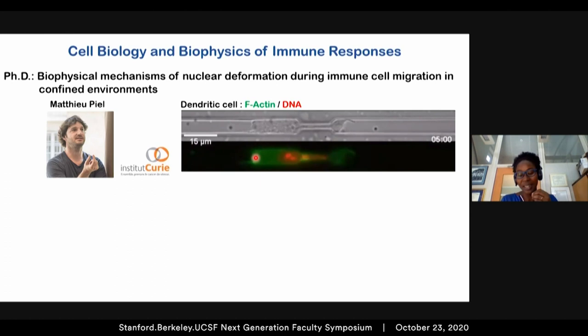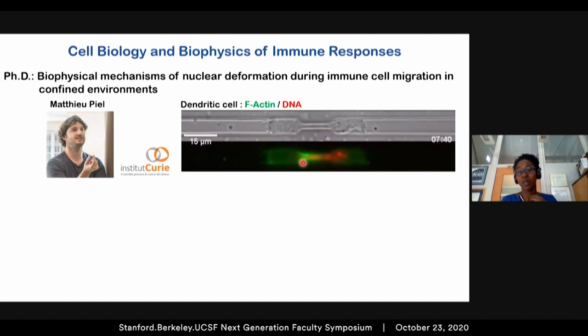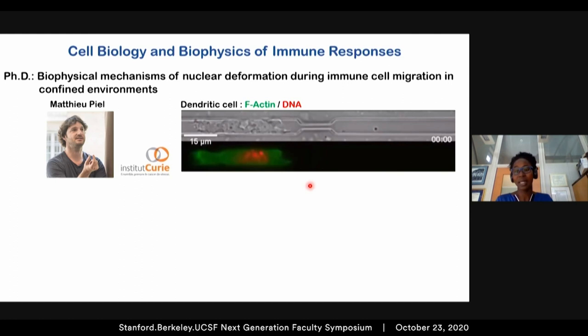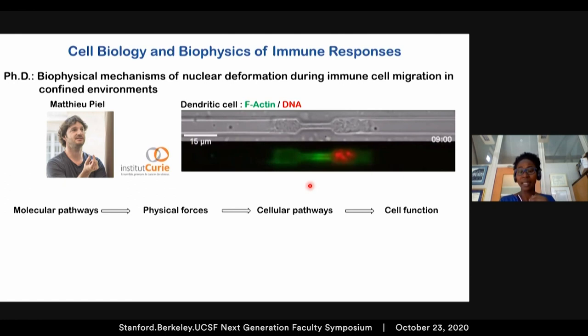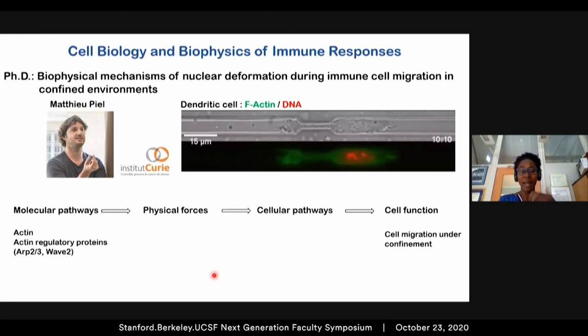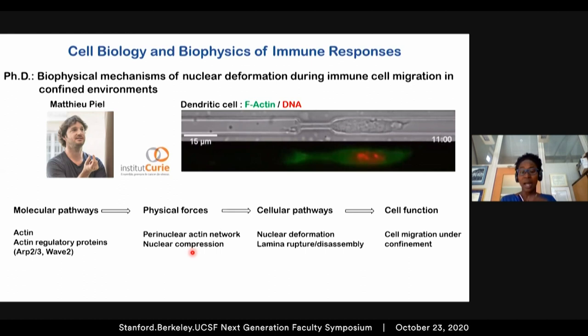With these channels, I can control the confinement of the cell. Here we have a dendritic cell migrating through those channels — in red we can see the DNA, and in green the actin cytoskeleton. What we showed was that when the nucleus engages inside the constriction, there is a burst of actin polymerization around the nucleus, and this actin polymerization was critical for nuclear deformation and cell migration. I identified a molecular pathway — namely actin and actin regulatory proteins — important for cell migration under confinement. This molecular pathway allows the generation of a perinuclear actin network, which applies compressive forces on the nucleus, leading to nuclear deformation and rupture of the nuclear shell, which is the laminar network.